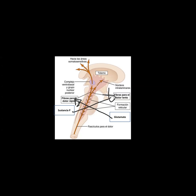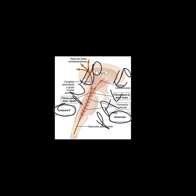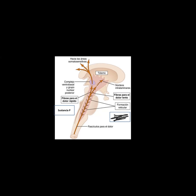El fascículo neoespinotalámico utiliza fibras tipo A-delta y el fascículo paleoespinotalámico utiliza fibras tipo C. El paleo lleva la información del dolor lento y crónico a través de las fibras tipo C, mientras que el neo utiliza las fibras A-delta. El neurotransmisor del neoespinotalámico es el glutamato, y el del paleoespinotalámico es la sustancia P.